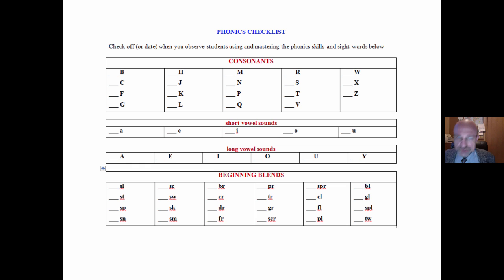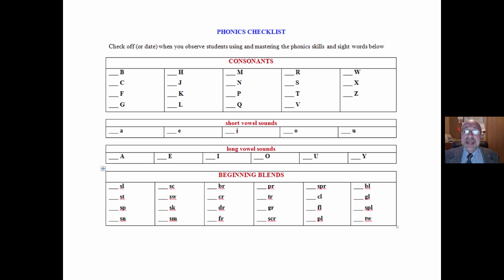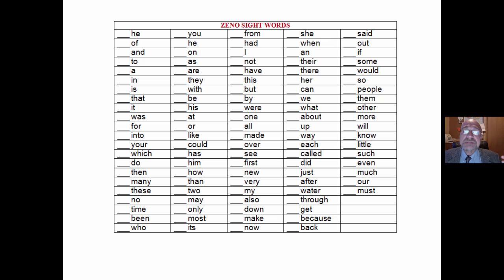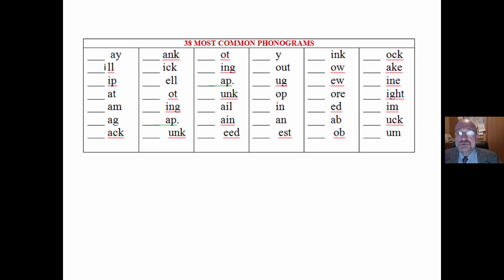I recommend keeping a sheet like this individually for every student in a three-ring binder. Listen to three students a day, and as you observe them mastering one of these reading sub-skills, you simply date that. That's a very direct and valid assessment of students' ability and mastery of these reading sub-skills.